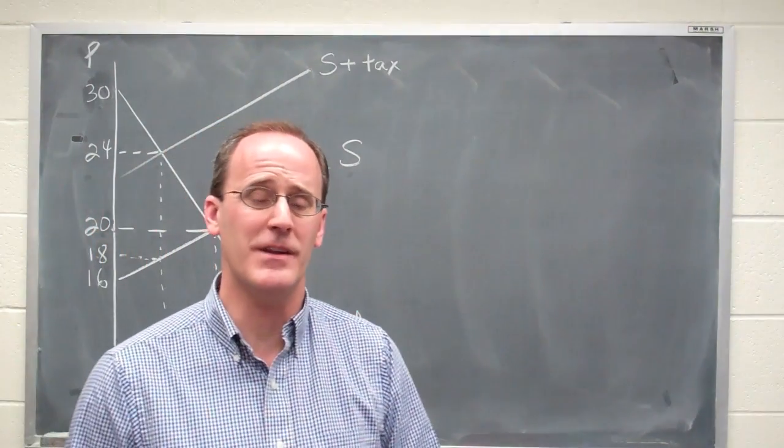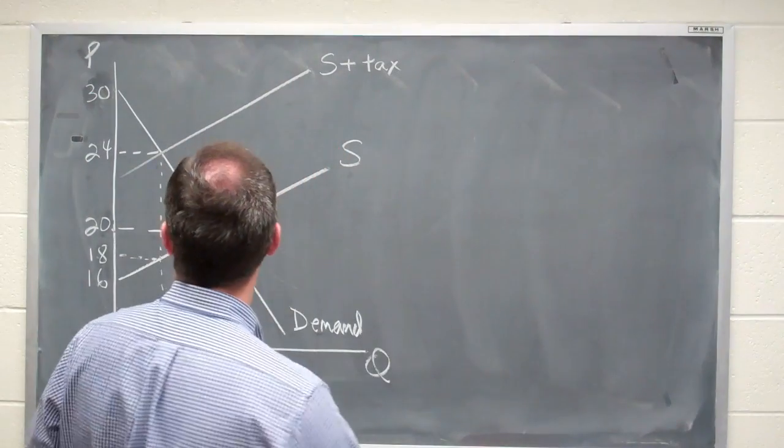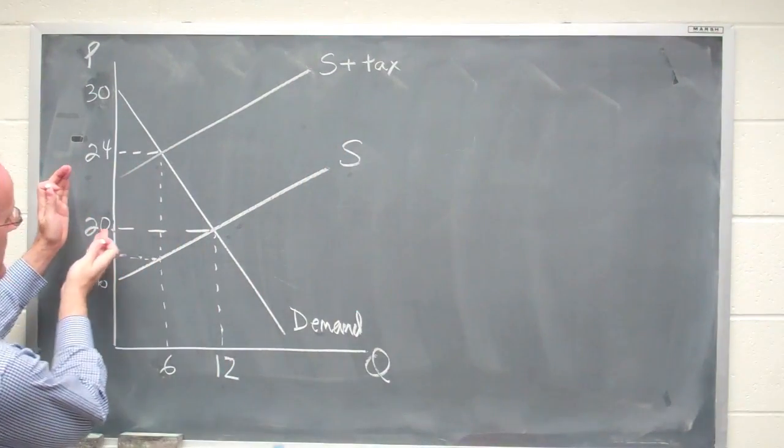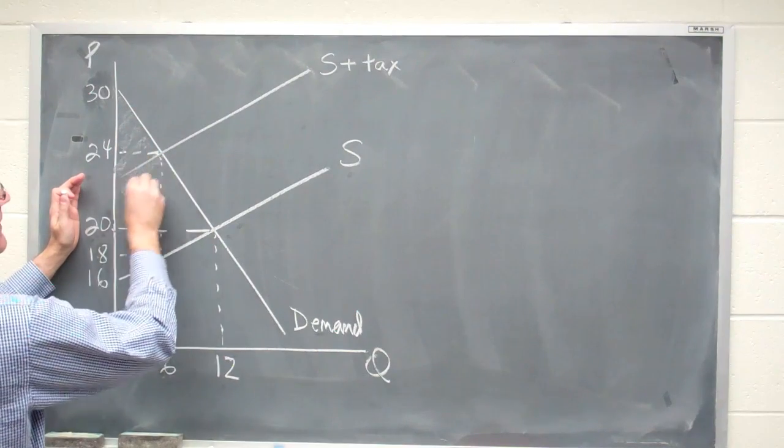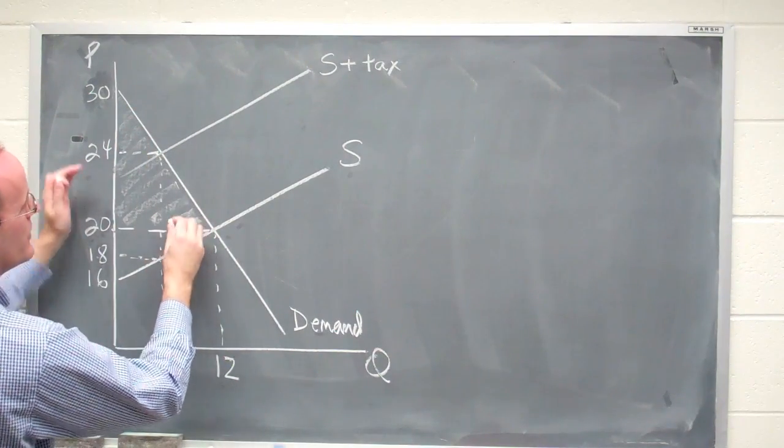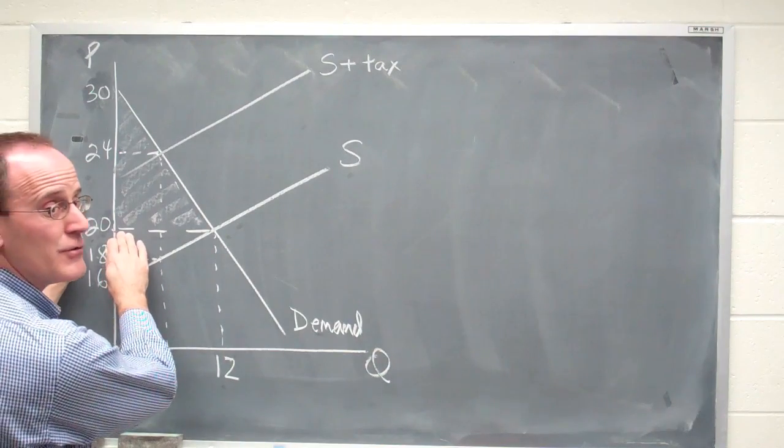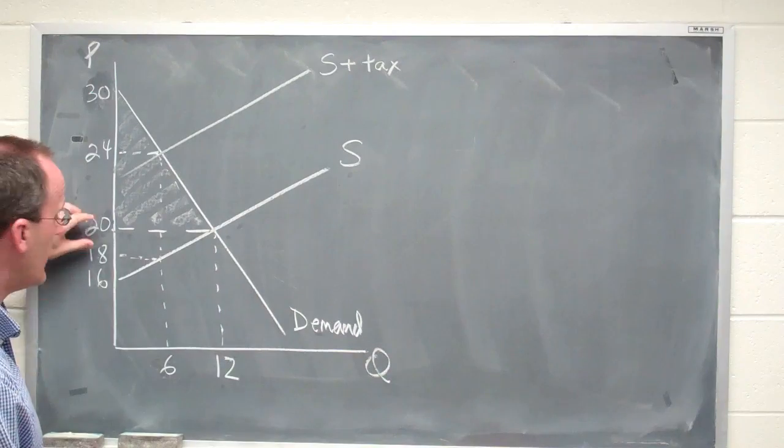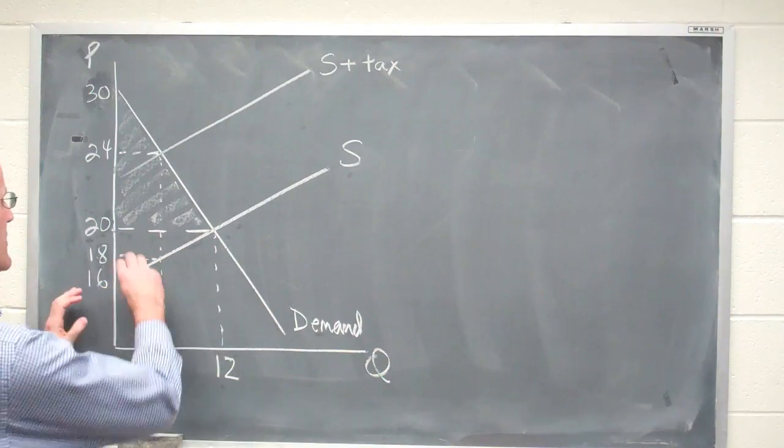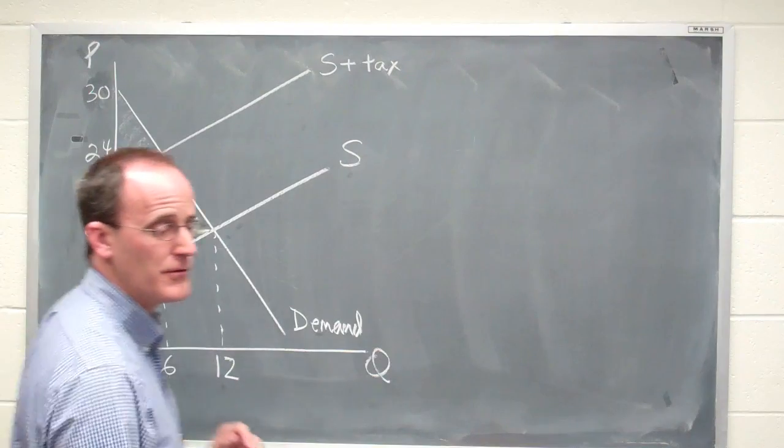So let's figure out what's happened here by examining consumer and producer surplus first. The consumer at the old price of $20 had the area under the demand curve and above the old price. That would be the original area of consumer surplus. The producer had everything below the price they could sell the good at and above the supply curve. That would be the producer surplus.